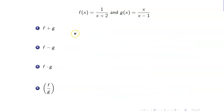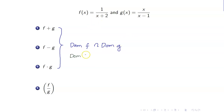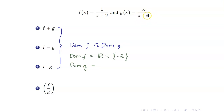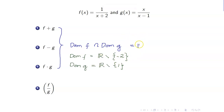Let us now find the domain of these four functions. For the sum, difference, and product, the domain is equal to the domain of f intersected with the domain of g. The domain of f: f contains a denominator x plus 2, so you take away the value which makes the denominator zero — that's negative 2. The domain of g: take away the value which makes the denominator zero — when x equals 1, the denominator is 0, so it's all reals minus 1. Therefore, the intersection of the two domains is the set of all reals minus negative 2 and 1.